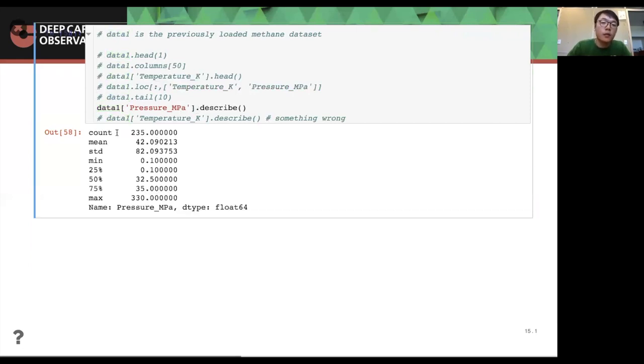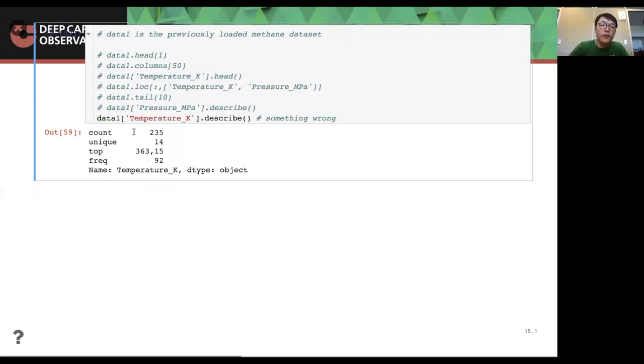Also for numerical data, you can use the function called the describe. If you use the describe, it will tell you how many counts are there, what's the mean of the data, what's the standard deviation, mean of first quartile, second quartile, third quartile, and the maximum number of this. However, if we perform this on the temperature, it will give you a different thing. So it will say count, unique, top and frequent. So apparently the data, there are some, there is something wrong with temperature column and we will deal with this later.